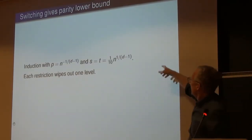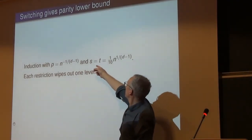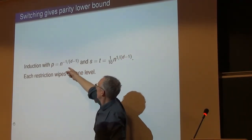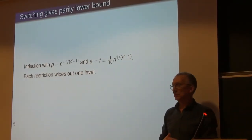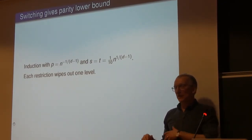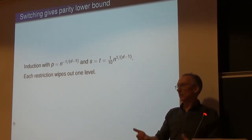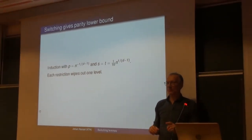To get the bounds you want, set S and T to a negative power of N, use a p such that p*T equals about 1/10, and it all works out. You remove one layer at a time by induction — the rest is just calculations. For depth 4 you apply to the bottom two levels, switch, get two adjacent same-type levels, collapse to depth 3, then do induction.